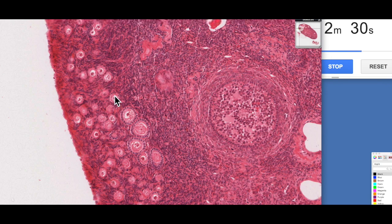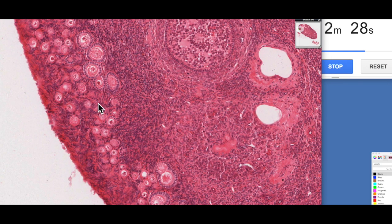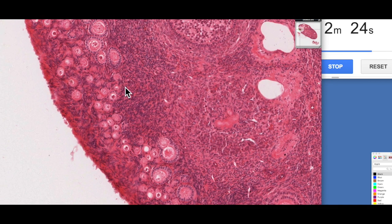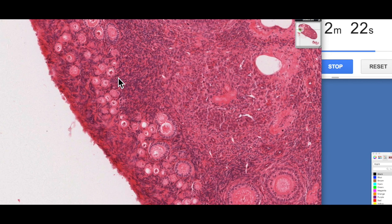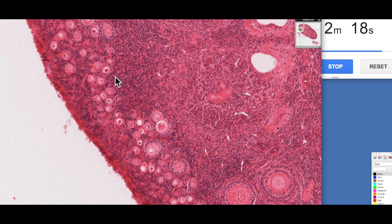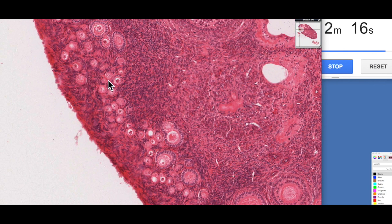These are the store of follicles, which some are stimulated to grow each month and become primary follicles. So primordial follicles are classically identified as having these small round cytoplasms. You can see the nucleus here. So we'll zoom in a little bit.